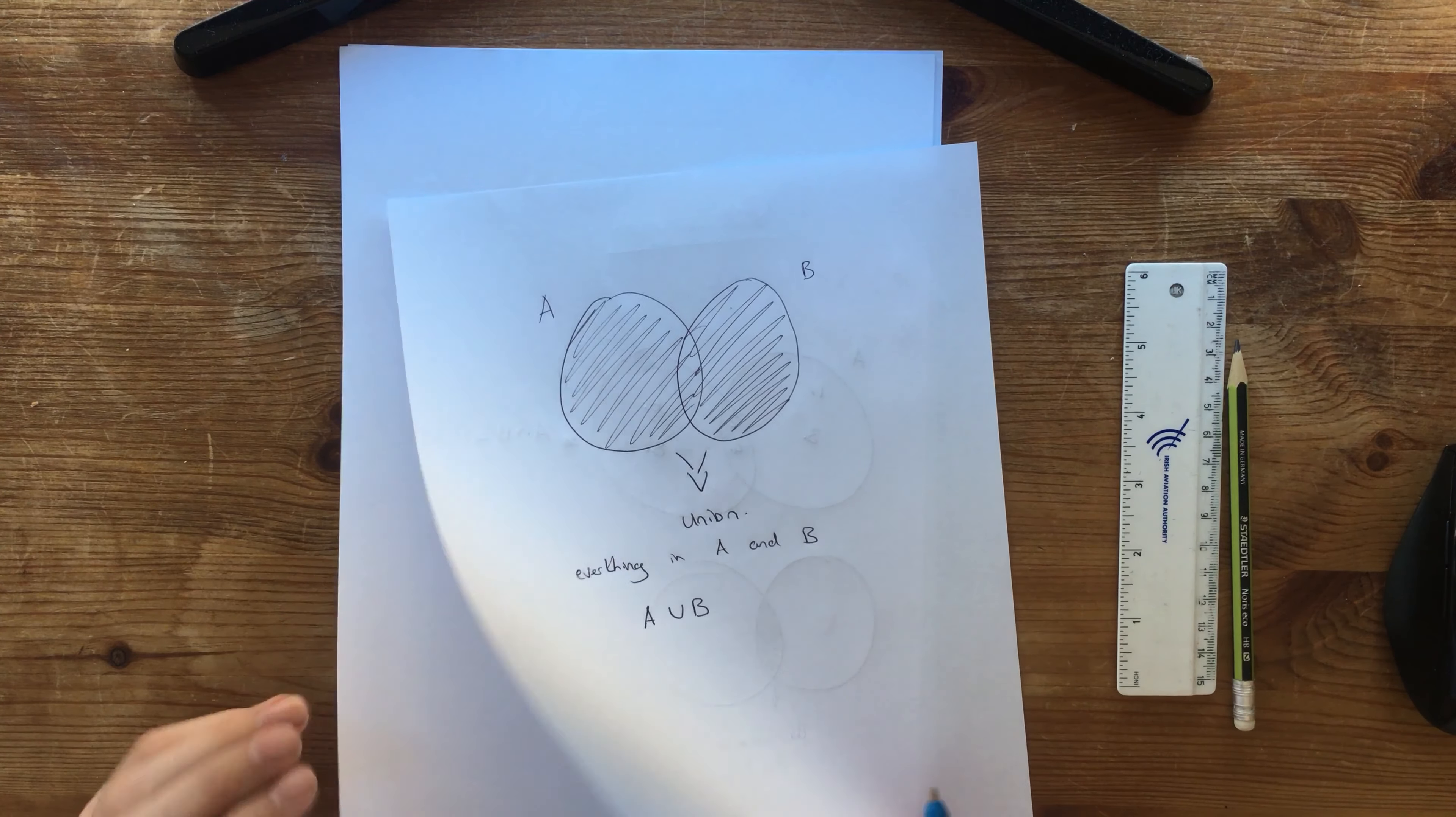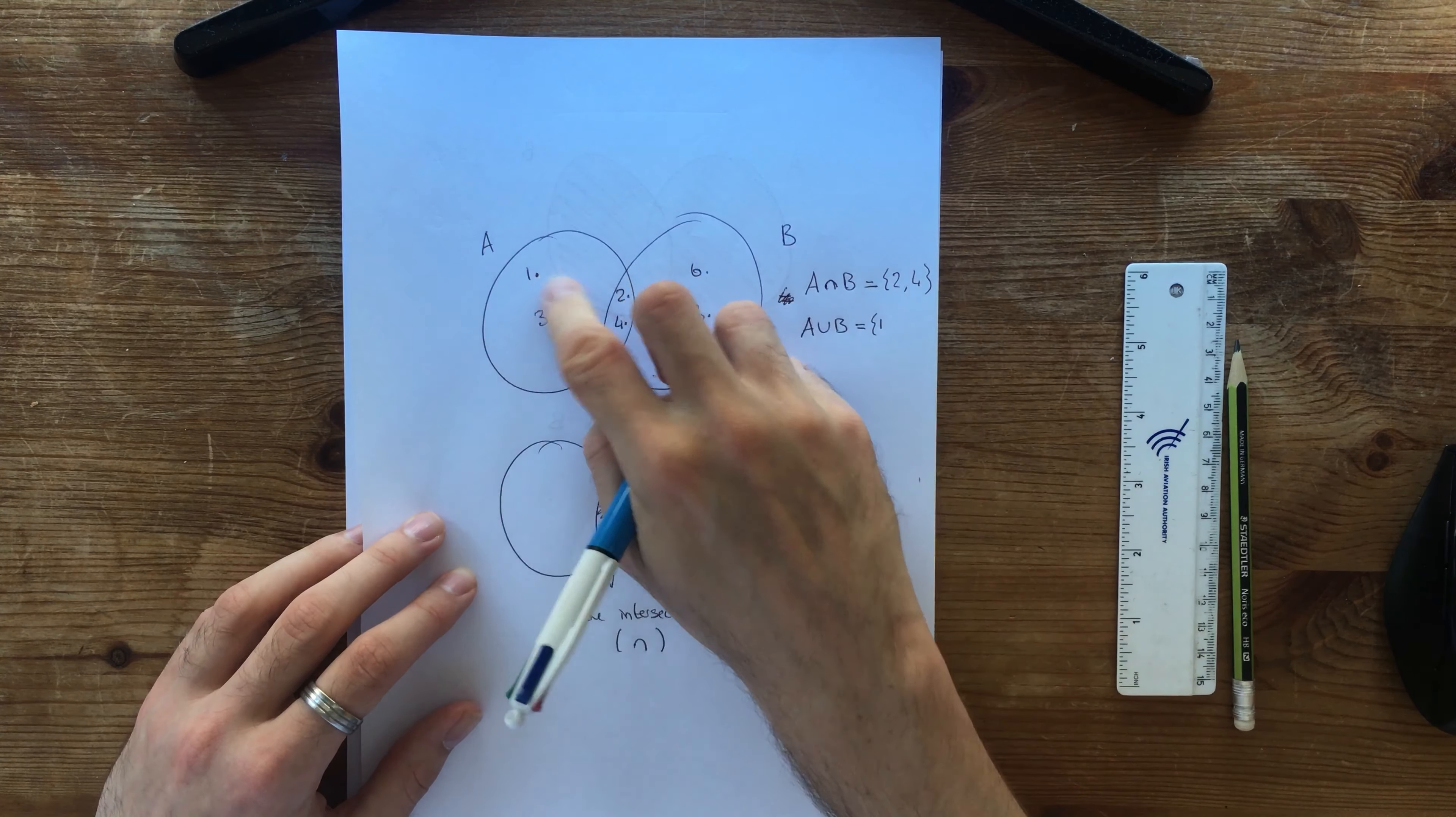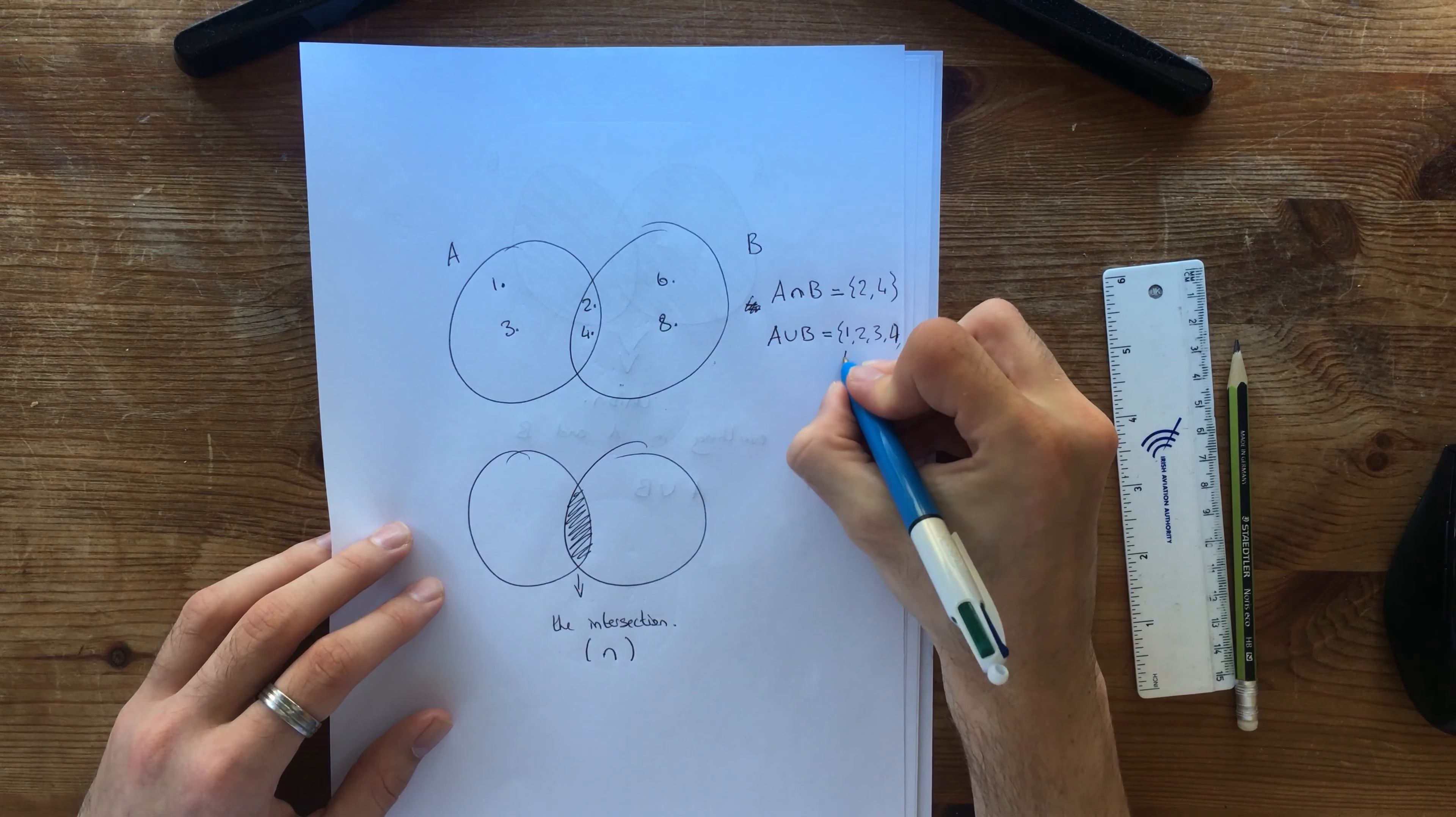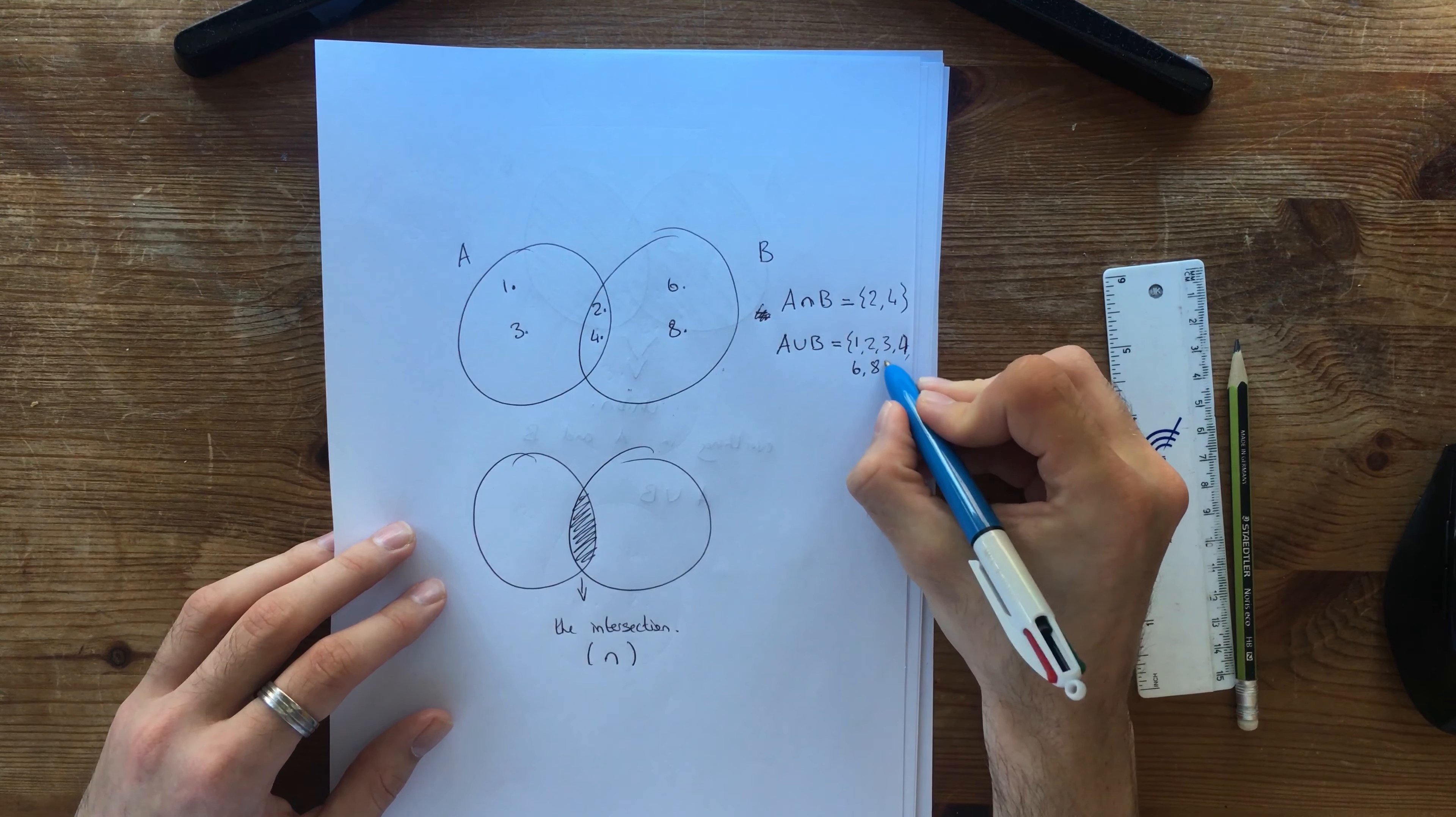So let's take a look back at our last one. And if we look at A union B of this, remember A union B is everything that's in this and in this. So we're going to have 1 is in A, 2 is in A, 3 is in A and 4 is in A. And then what's in B? We've got 6 is in B and 8 is in B. And remember our rule about sets is that we can't repeat an element. So 2 is in B but 2 is already there and 4 is in B but 4 is already there. So there we go.